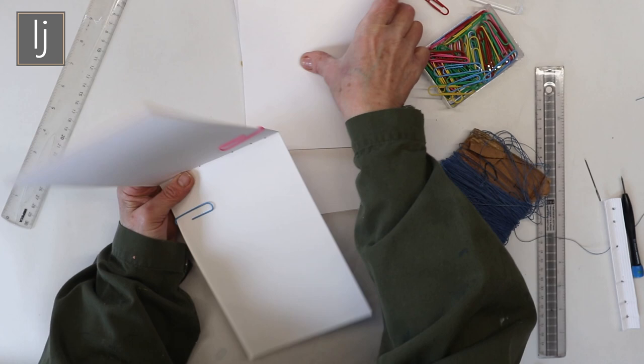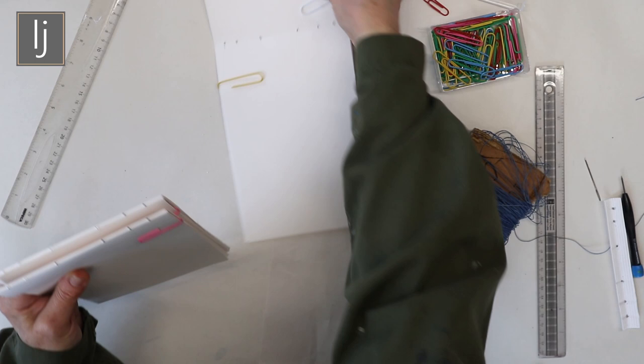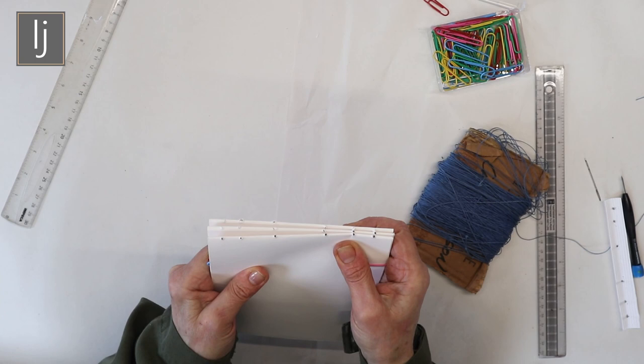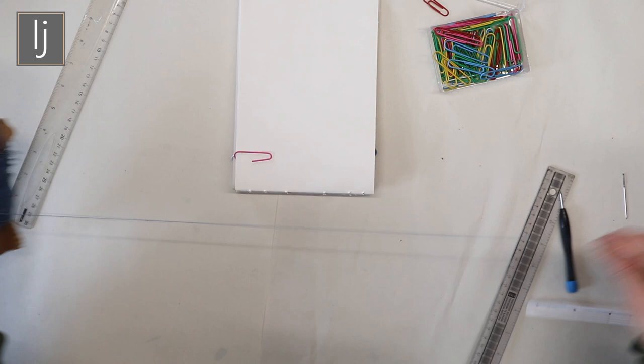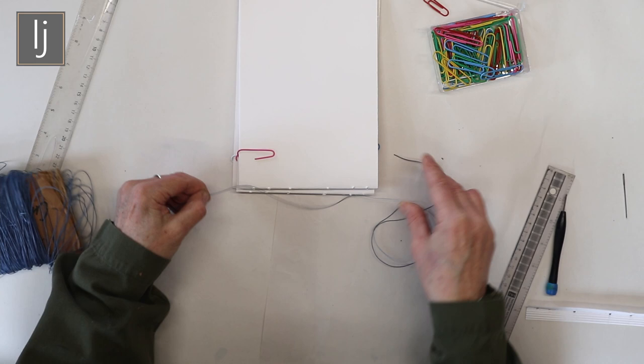You do that and then you end up with holes in the right place for your signatures, and then you can sew it up. To sew it up, leave them clipped together. You need a length like three times the size because you want to go backwards and forwards and backwards, and a bit extra for knotting.